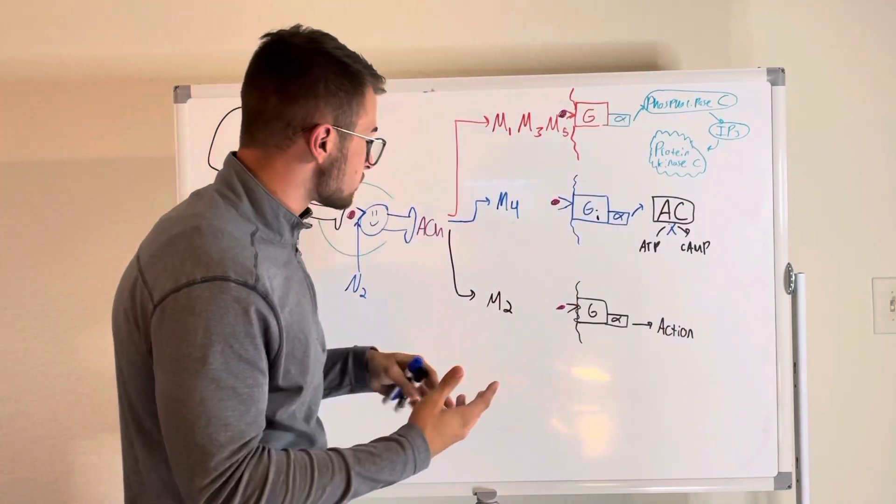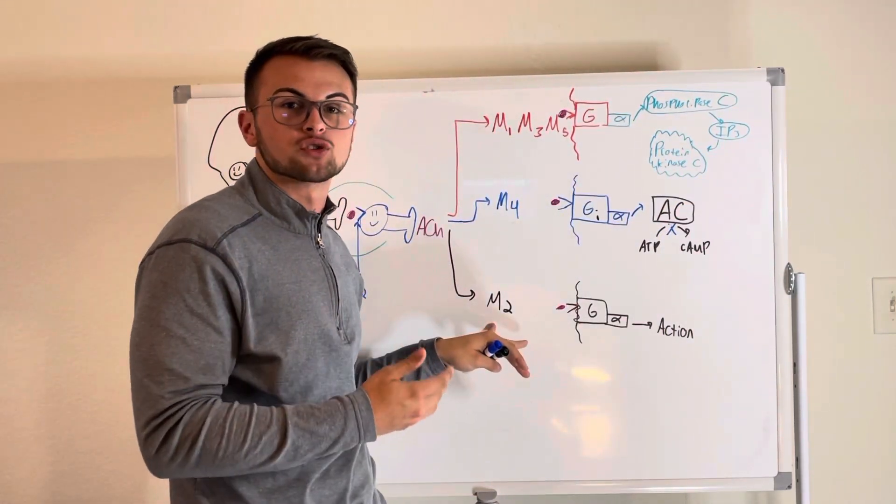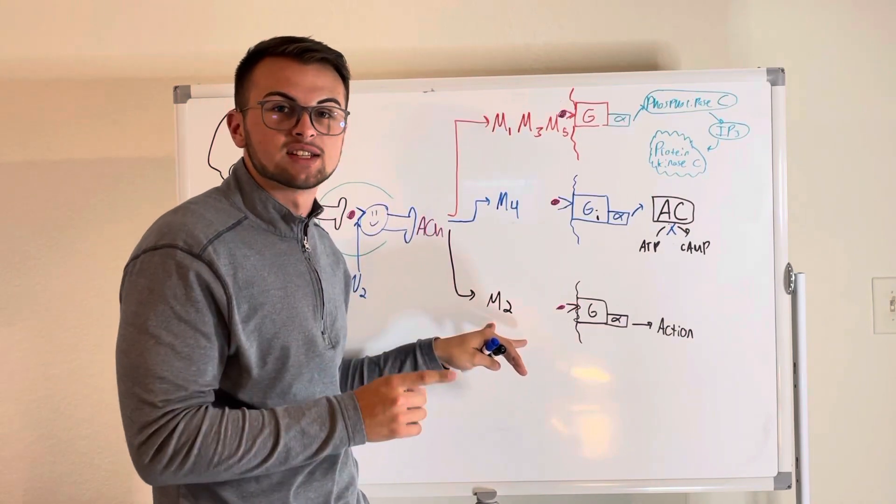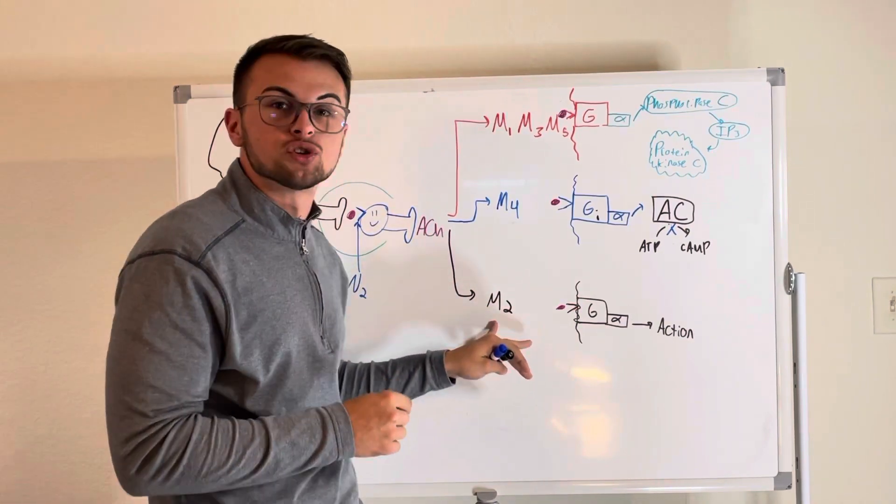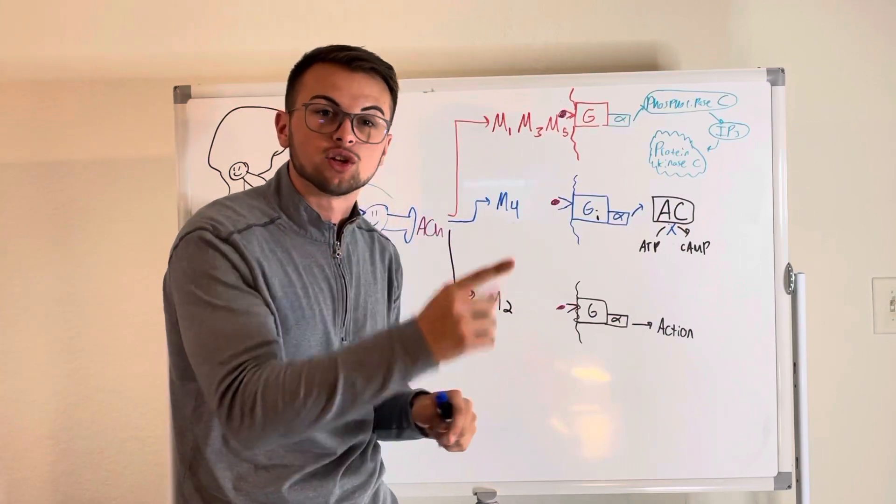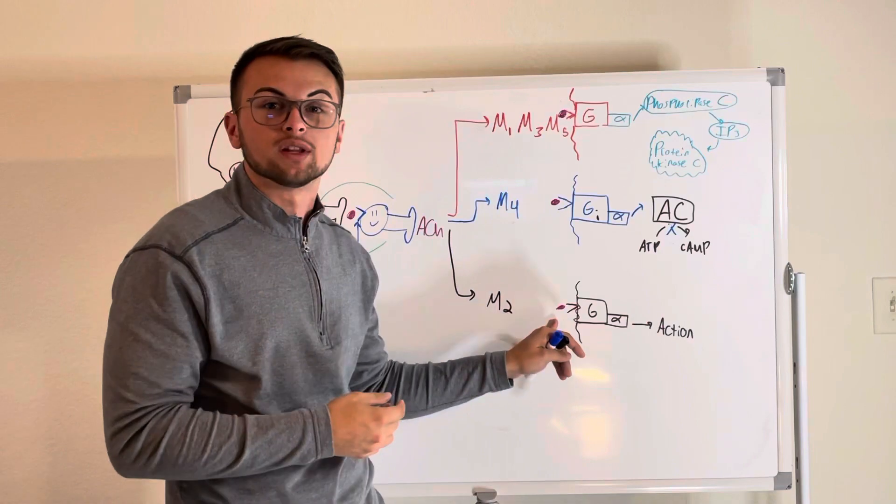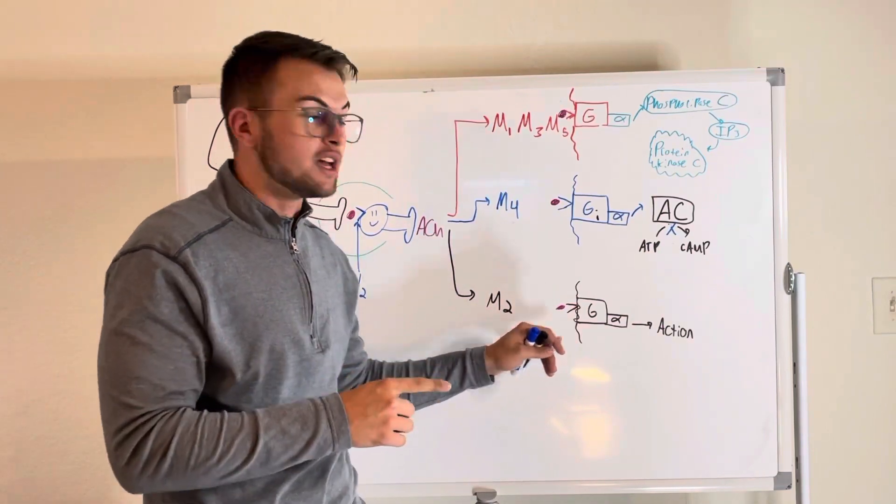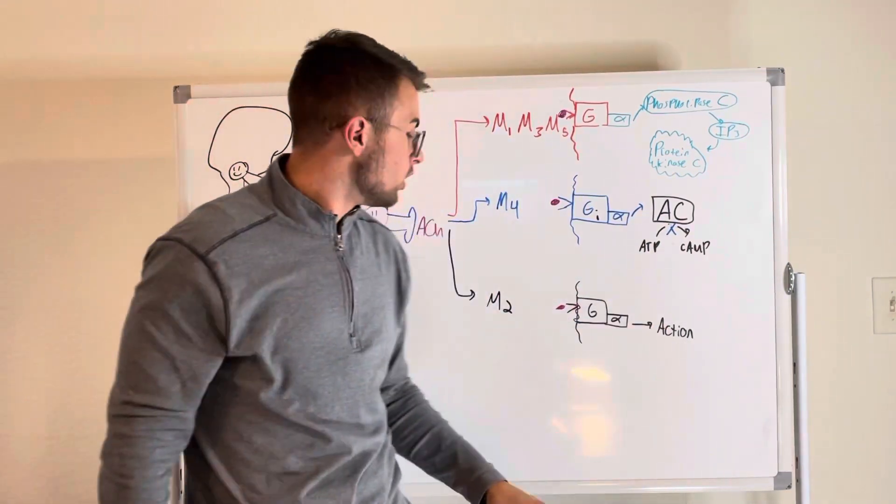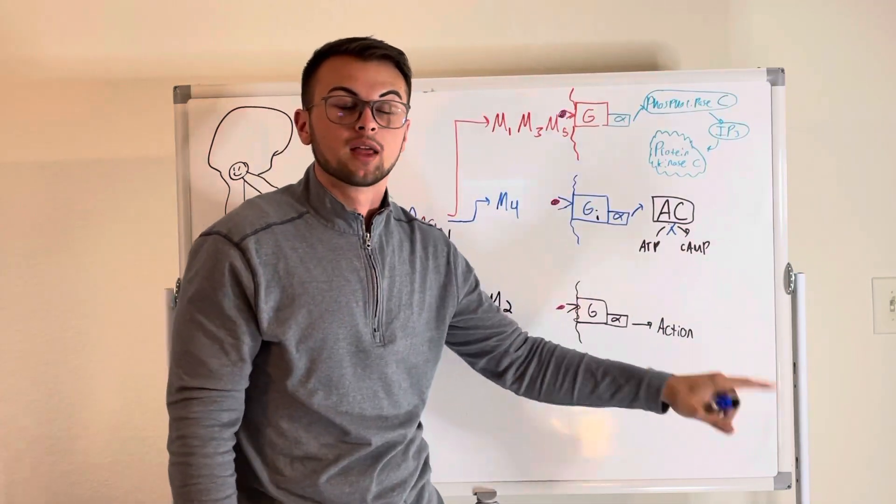Now, interestingly, M2 receptors, or muscarinic 2 receptors, directly activate the cell. So this is why we say M2 directly activate you. This is because M2 receptors, when they are bound to acetylcholine, become activated and will actually directly activate the cell to perform its action.